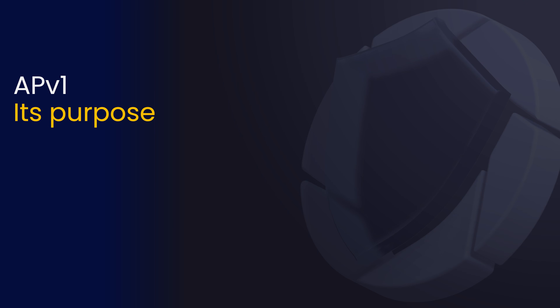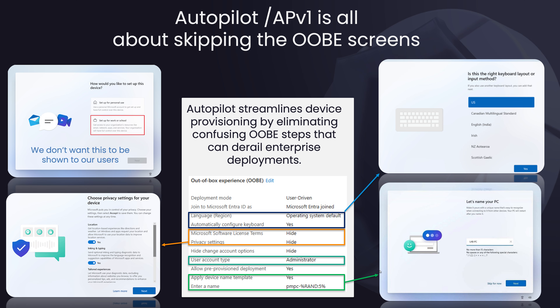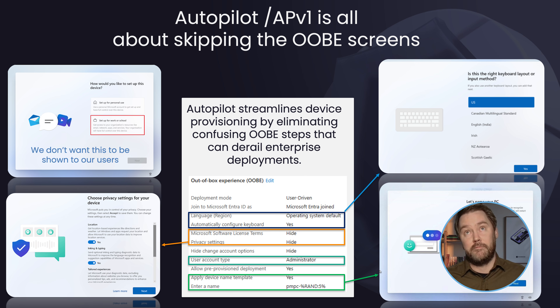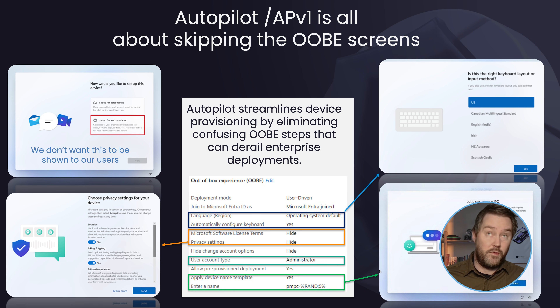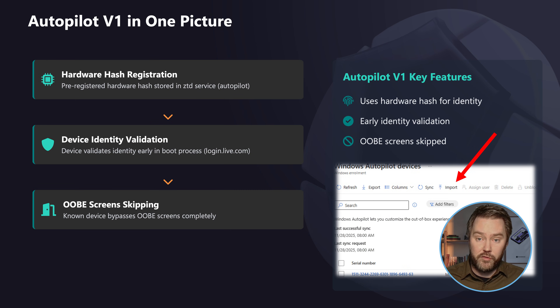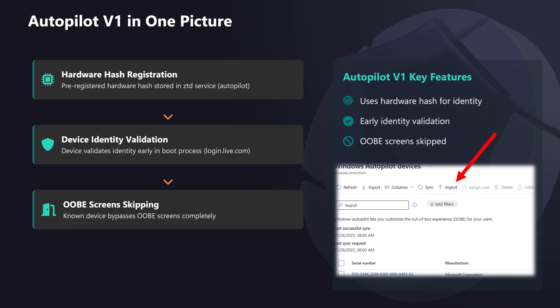To learn why that gap needs to be filled, we need to rewind and examine what Autopilot version 1 is and what it does. In my opinion, classic autopilot — APv1 — is all about skipping the out-of-box experience screens and questions, nothing more, nothing less. It also decides if the enrolling user becomes a standard user or an admin on the device, which we don't want.